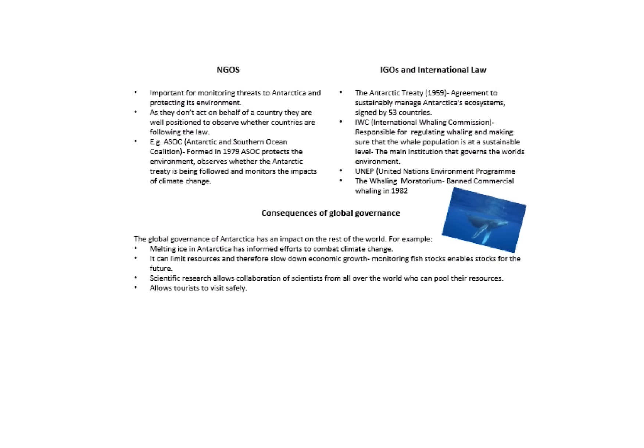Thinking about NGOs — non-governmental organisations — within Antarctica, these are really important for monitoring threats. They don't act on behalf of any country; they're positioned to observe whether countries are following the law. In terms of international law, you have the Antarctic Treaty from 1959 — the agreement countries have signed to sustainably manage Antarctica's ecosystem. You also have the IWC (International Whaling Commission), responsible for regulating whaling at sustainable levels, the United Nations Environment Programme, and the Whaling Moratorium, which banned commercial whaling in 1982.